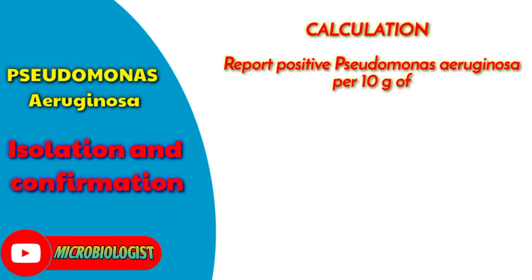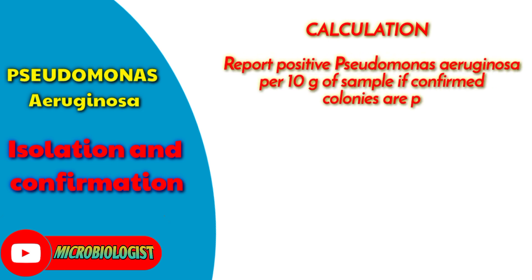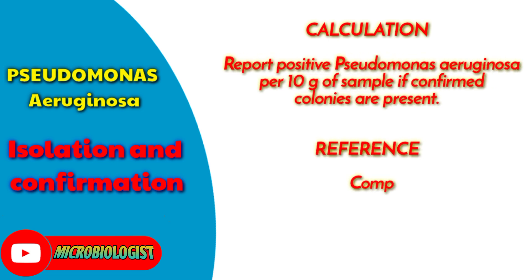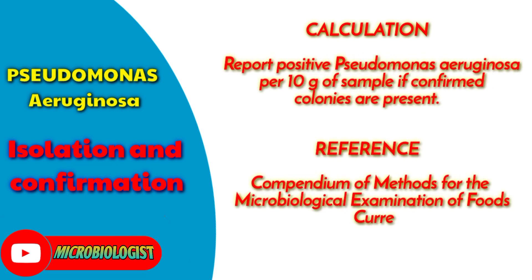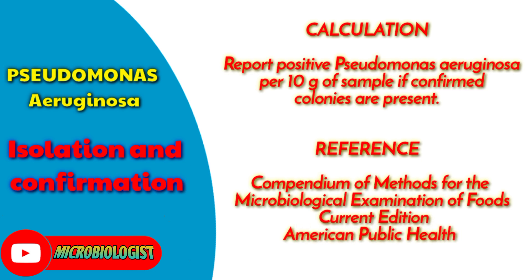Calculation: Report positive Pseudomonas aeruginosa per 10 g of sample if confirmed colonies are present. Reference: Compendium of Methods for the Microbiological Examination of Foods, current edition, American Public Health Association.